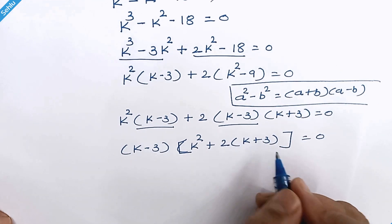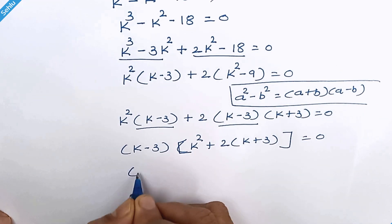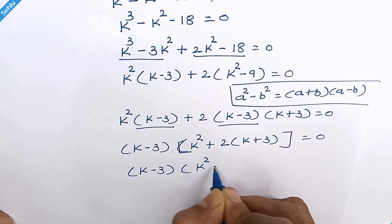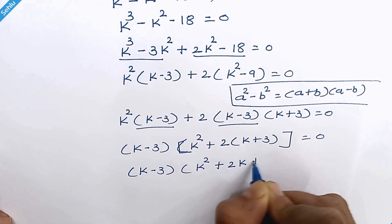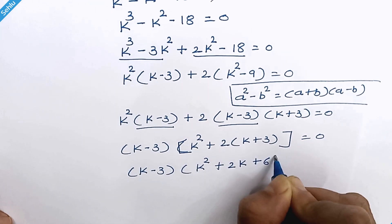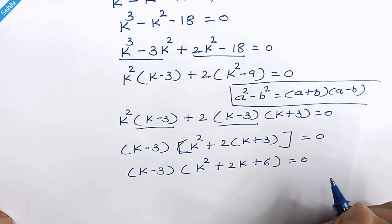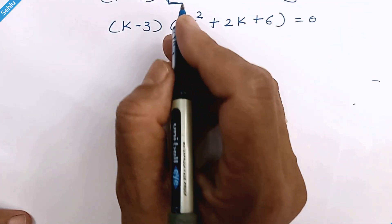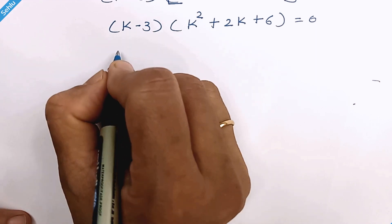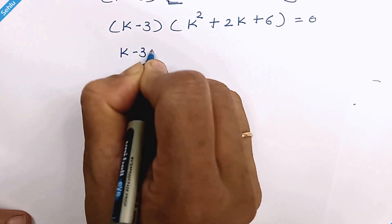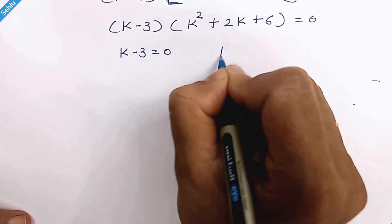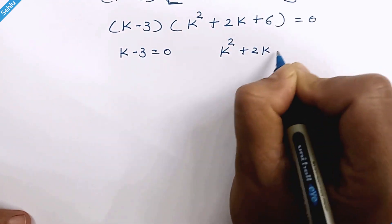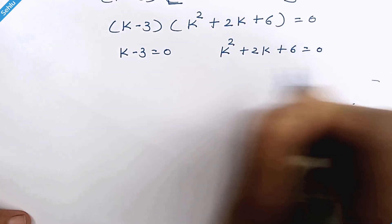Expanding 2 into the bracket gives 2k plus 6. So we have k minus 3 is equal to 0 and k square plus 2k plus 6 is equal to 0.